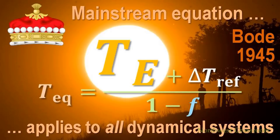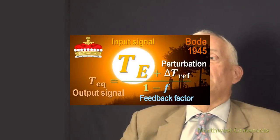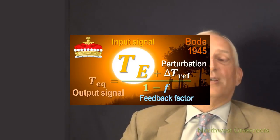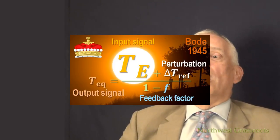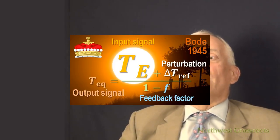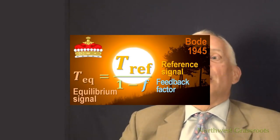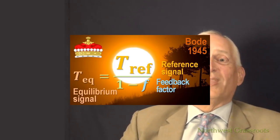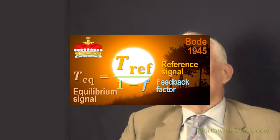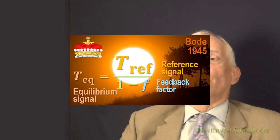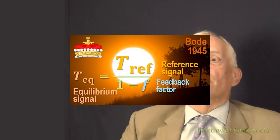Then you divide that by one minus the feedback factor, and that gives you the output of the equation, the output signal in an electronic circuit, or in the climate, and that is Teq. So that equation can also be simplified. We can add together the two terms at the top there, Te and delta T ref, and call them T ref. So Teq, the equilibrium temperature after all feedbacks have acted, is the reference temperature divided by one minus the feedback factor. This is actually a very simple equation. It only has three terms in it. You've got Teq on the left, which is what you're trying to calculate. You've got T ref, which includes within it the sunshine term Te. And then you've got F on the bottom, and one minus F is how you account for the feedback factor.